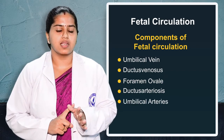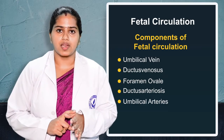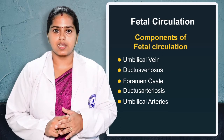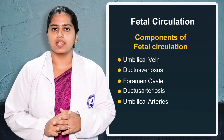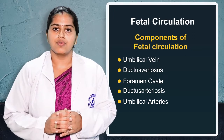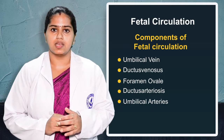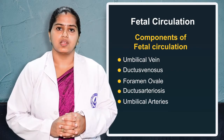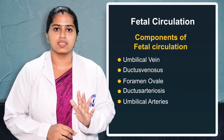The last component, fifth, is the umbilical arteries. These arise from the abdominal aorta, which divides into the internal iliac arteries and then forms two umbilical arteries. The umbilical arteries carry all the deoxygenated blood from the fetal part, enter into the placenta, and reach the maternal side. So these are the main five components of fetal circulation.